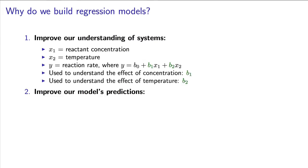Our goal here is to interpret these constants B1 and B2. These constants tell us how the concentration and temperature affect the reaction rate. We're not so much interested in the predictions of the reaction rate. After all, we've measured them there in the y-value. We're more interested in understanding how concentration and how temperature affect the reaction rate.